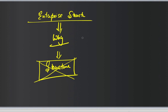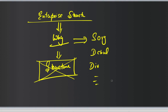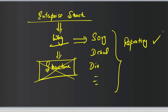Barring a few exceptions, most of the elements in the enterprise structure — like sales org, distribution channel, division, sales office, sales group — these things are really useful for reporting. This is the most fundamental reason why we do enterprise structure.